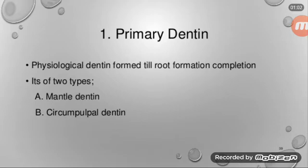Now, primary dentine. Primary dentine is formed till the root formation. These are of two types: number one, mantle dentine and circumpulpal dentine.